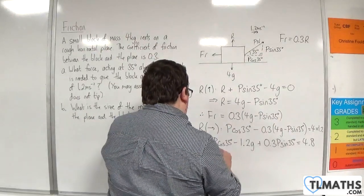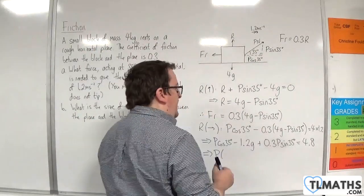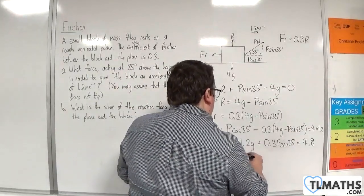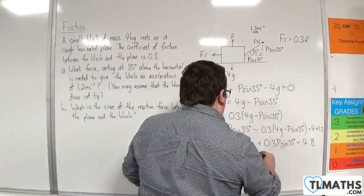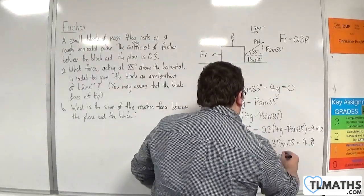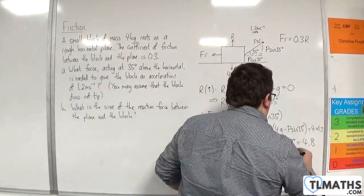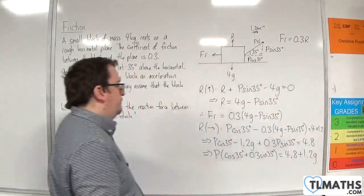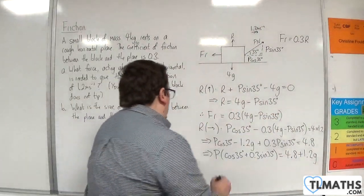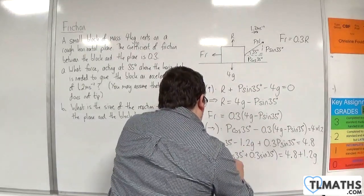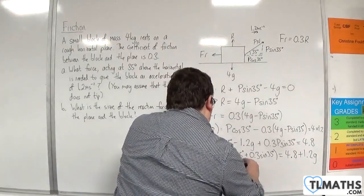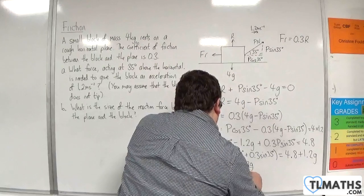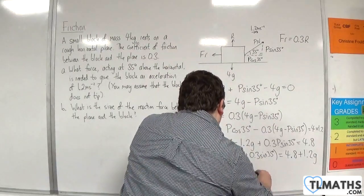Now if I factorise the P cos 35 and the 0.3 P sin 35, factor the P out, cos 35 plus 0.3 sin 35. I've got the 4.8 on the right-hand side, and I'm going to add the 1.2G to both sides. So P must be 4.8 plus 1.2G over cos 35 plus 0.3 sin 35.